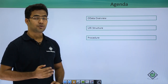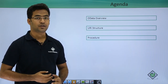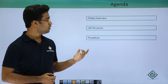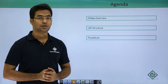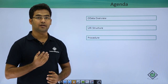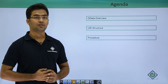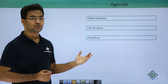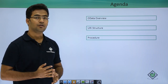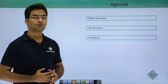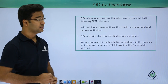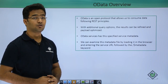First we will be covering OData overview — what OData is and all. Then we will see the URL structure of the OData service, where we get a URL for the OData service and will see its structure. Afterwards we will see an example of how to consume an OData service. Let us now move on to the next slide, OData overview.